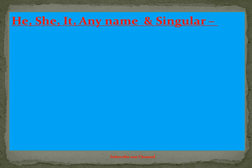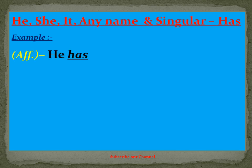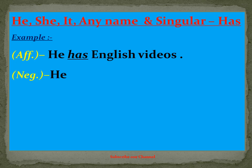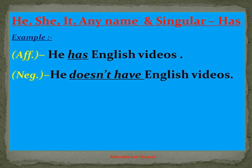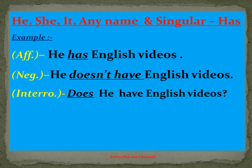We have an example with an affirmative sentence: He has English videos. Negative: He doesn't have English videos. Interrogative: Does he have English videos? Interrogative plus negative: Doesn't he have English videos?